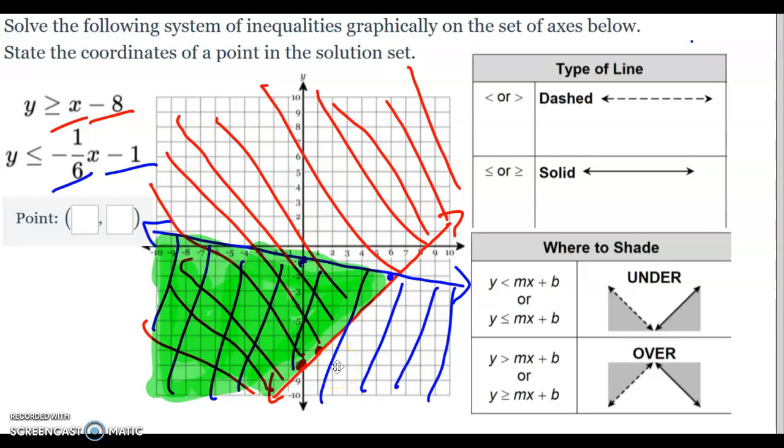I can pick any point in there. I happen to pick (-4, -4). So that's my point and that's it. That is how you do a system of inequalities. Thank you for checking out Mr. Ware's videos. Have a nice day.